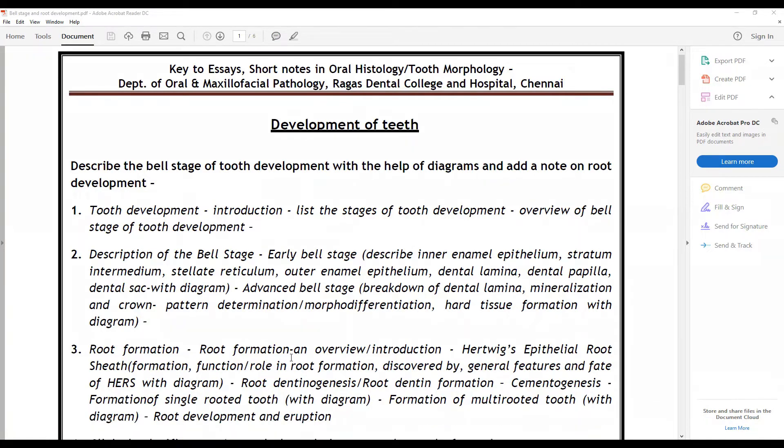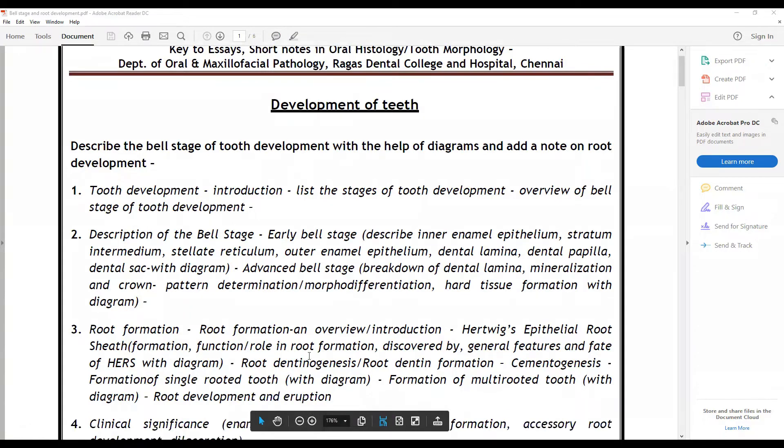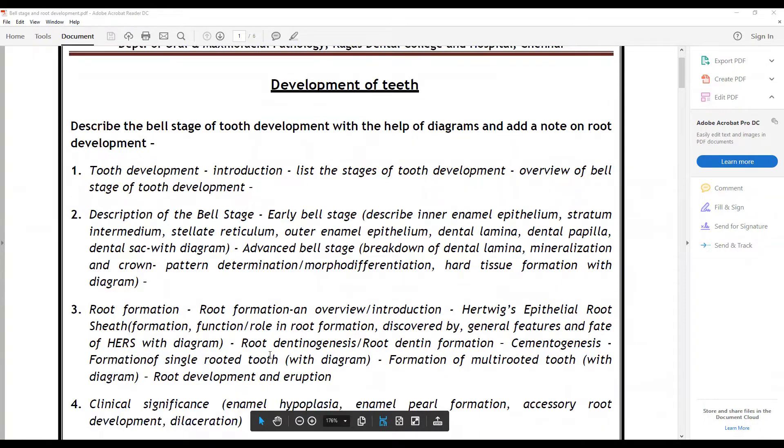The second part of the question is root development. Root formation - give an overview with the introduction. Talk about Hertwig's epithelial root sheath wherein you have to discuss the formation, role of the HERS in root formation, who it was discovered by, general features and fate of HERS with diagram, and talk a little about root dentinogenesis. Also briefly cementogenesis. Add a diagram on the formation of single root tooth or formation of multi-root tooth with diagrams along with root development and eruption. The last but important thing is add a note on clinical significance - talk about enamel hypoplasia, enamel pearl formation, accessory root development, and dilacerations.